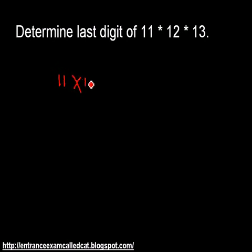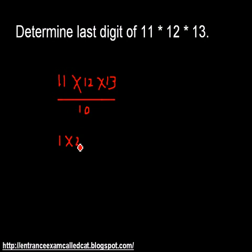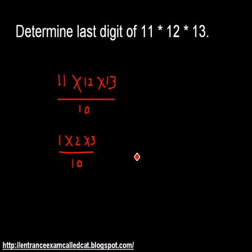So 11 × 12 × 13 — we want the unit digit of the product, so let us divide this by 10. Applying remainder theorem: 11 divided by 10 gives 1 as a remainder. 12 divided by 10 gives 2 as a remainder. 13 divided by 10 gives 3 as a remainder. For those who do not know what remainder theorem is, I request you to go back to my previous tutorials. So now we have remainders 1, 2, and 3, and we further divide their product 1 × 2 × 3 = 6 by 10. Since 6 is not divisible by 10, the remainder is 6, and this is the answer.